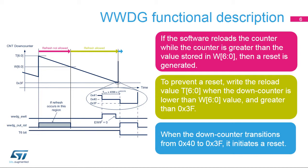If the software refreshes the watchdog while the down-counter is greater than the value stored in bits W6-0, a reset is generated. This happens when the application refreshes the watchdog too early, and no interrupt is generated in this case. To prevent a window watchdog reset, the watchdog refresh must happen while the down-counter value is lower than the time window value and greater than 0x3F. This is illustrated by the green area. The refresh operation consists of reloading the down-counter with bits T6-0.